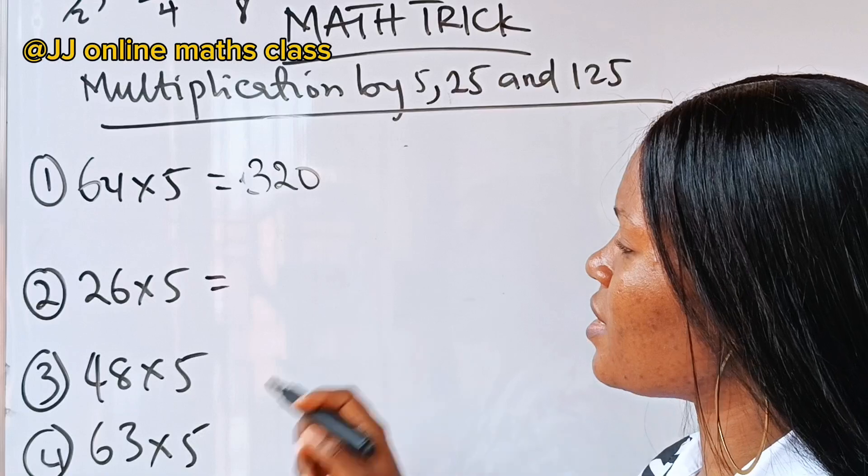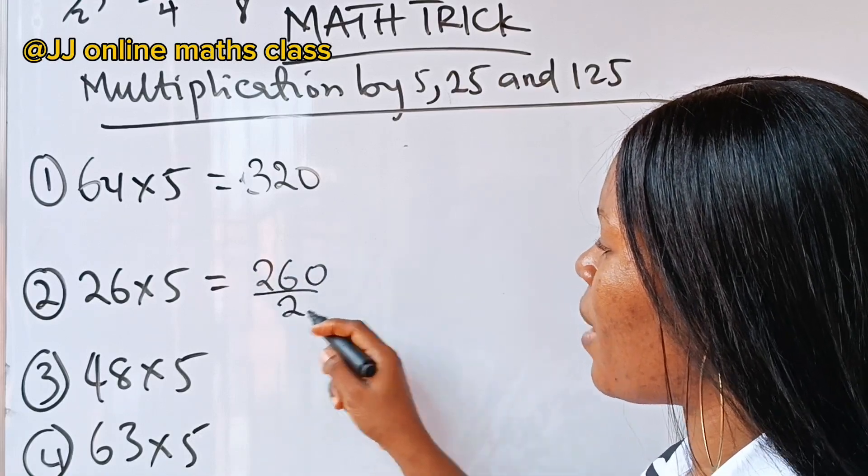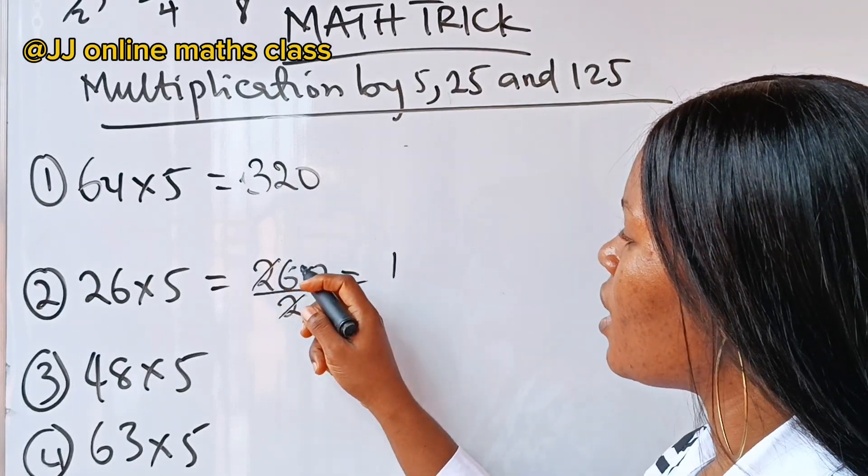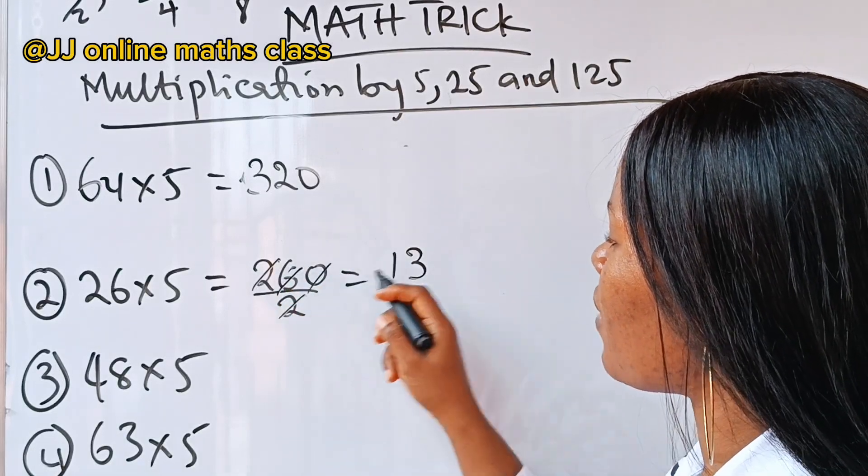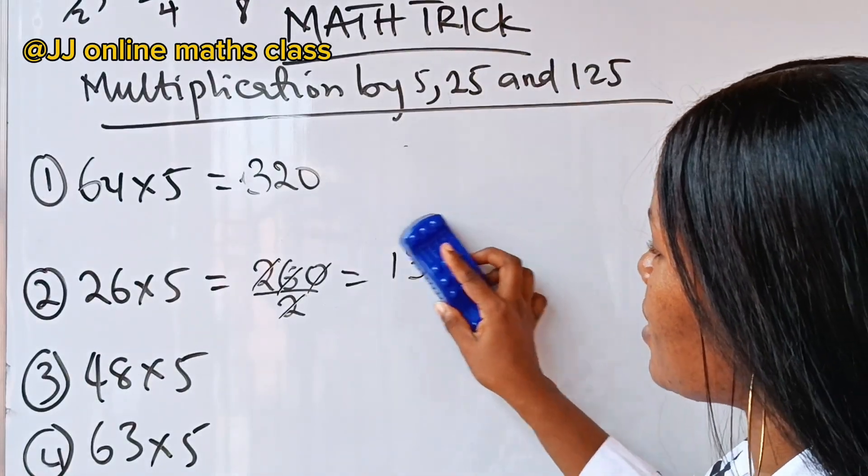Now, 26 multiplied by 5, the same thing. It's going to be 26 multiplied by 10 divided by 2. So, it's going to be 2, we divide this to give us 1, divide 6 to give us 3, divide this to give us 0. So, the solution is going to be 130.